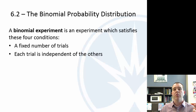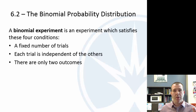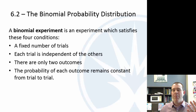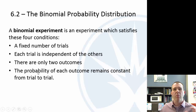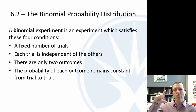The second condition is that the trials are all independent — what happened on the first trial doesn't affect the probability on the second trial. Third, there are only two outcomes: success or failure. And fourth, the probability is constant. Independence and constant probability are really related — they either both fail or both hold.